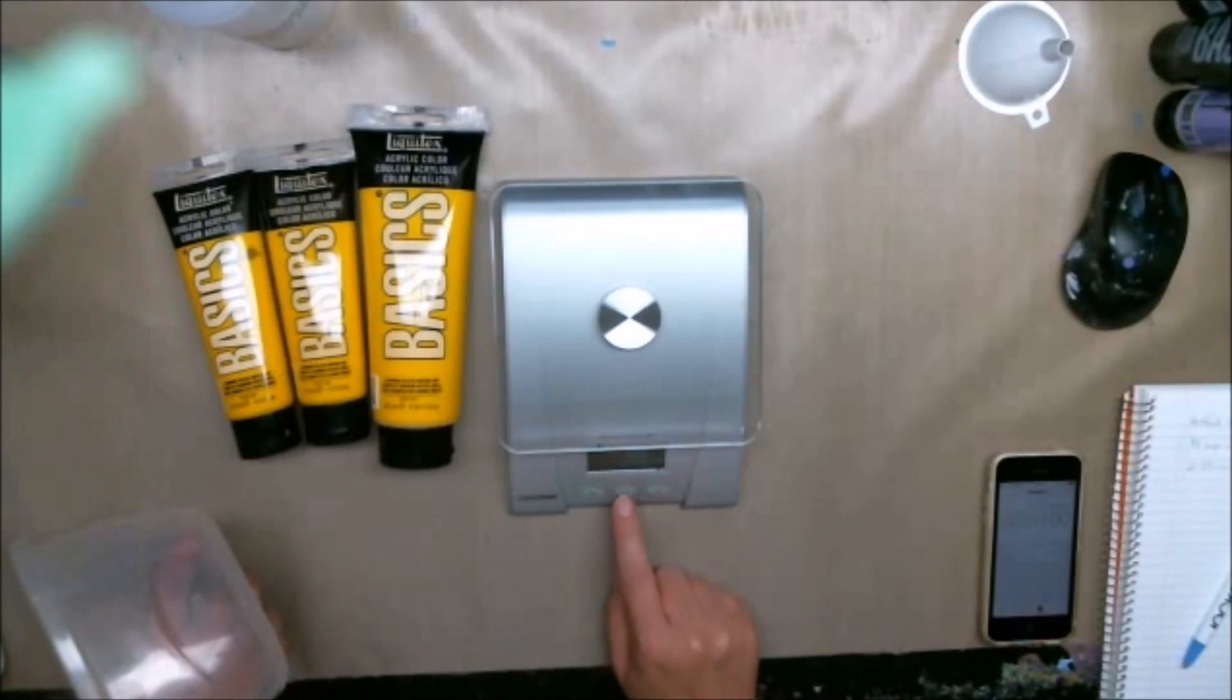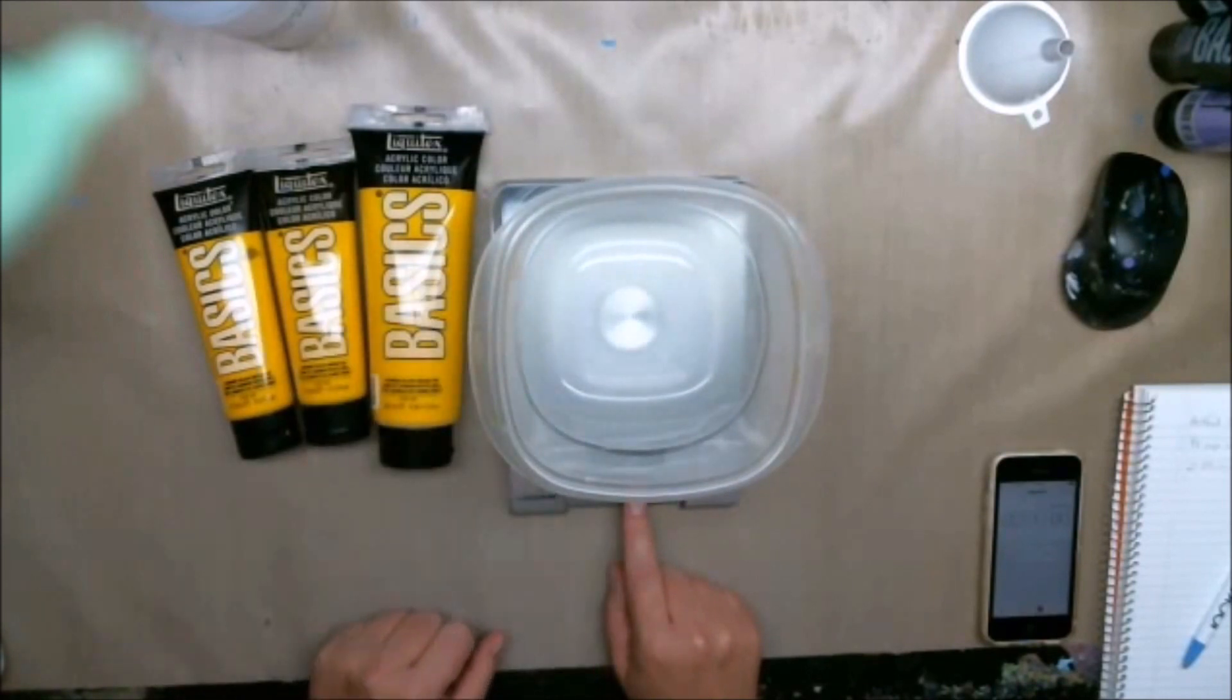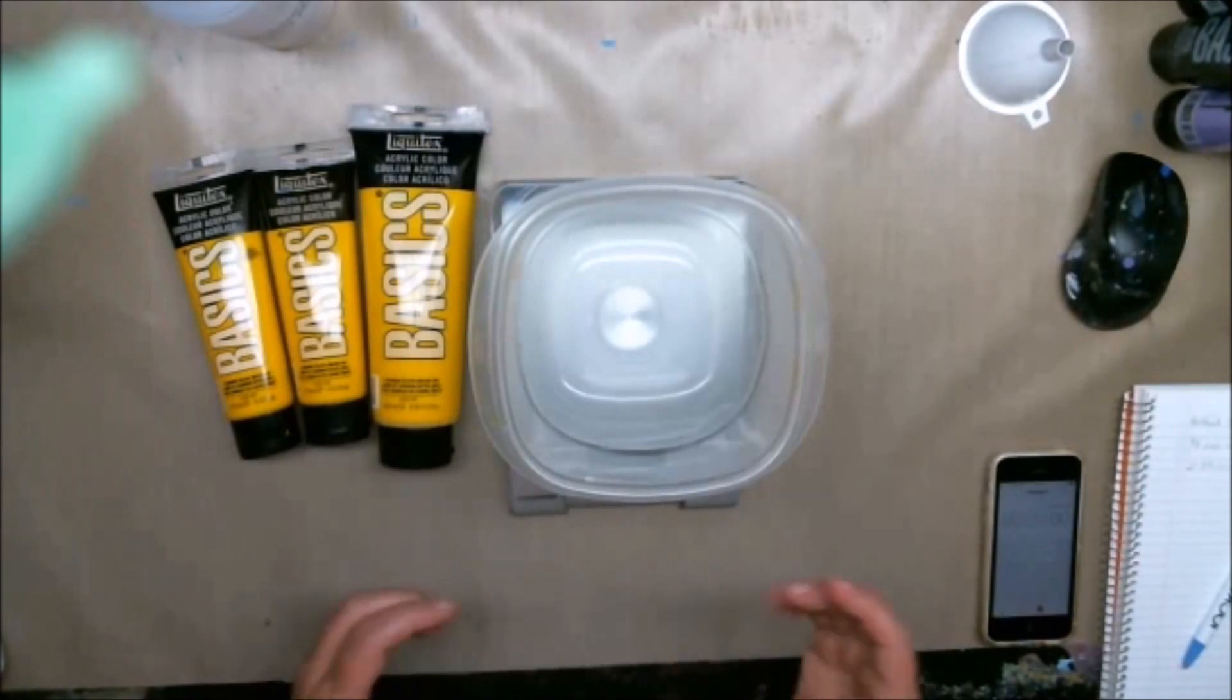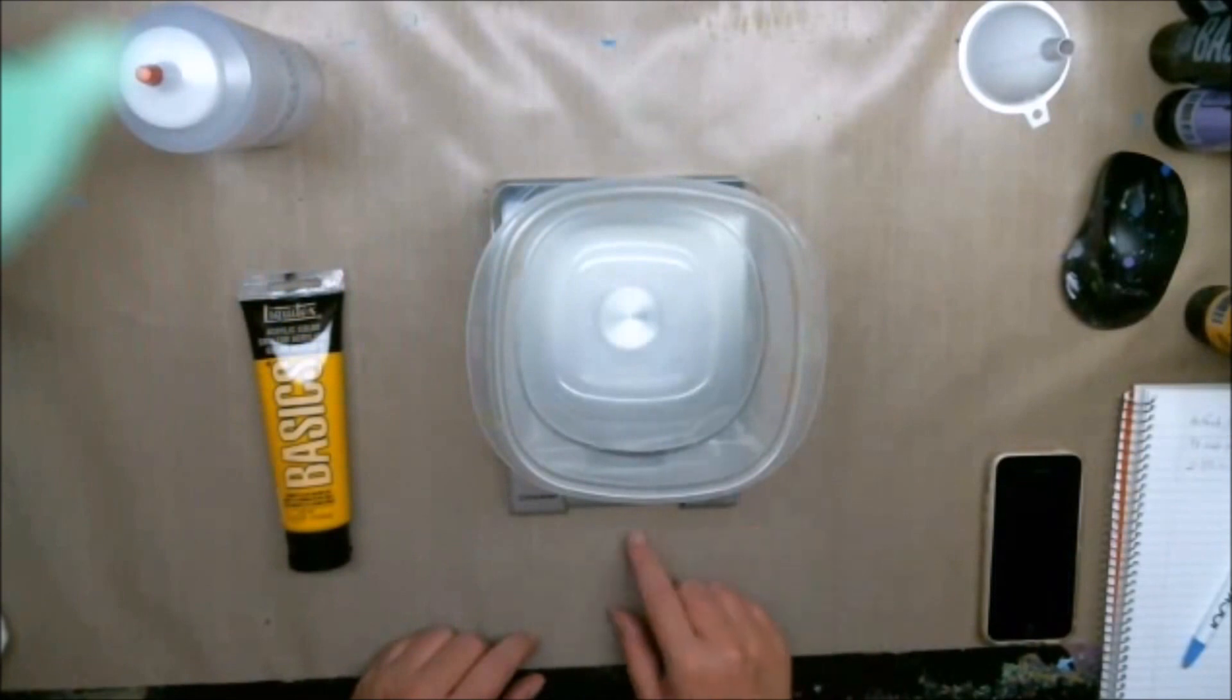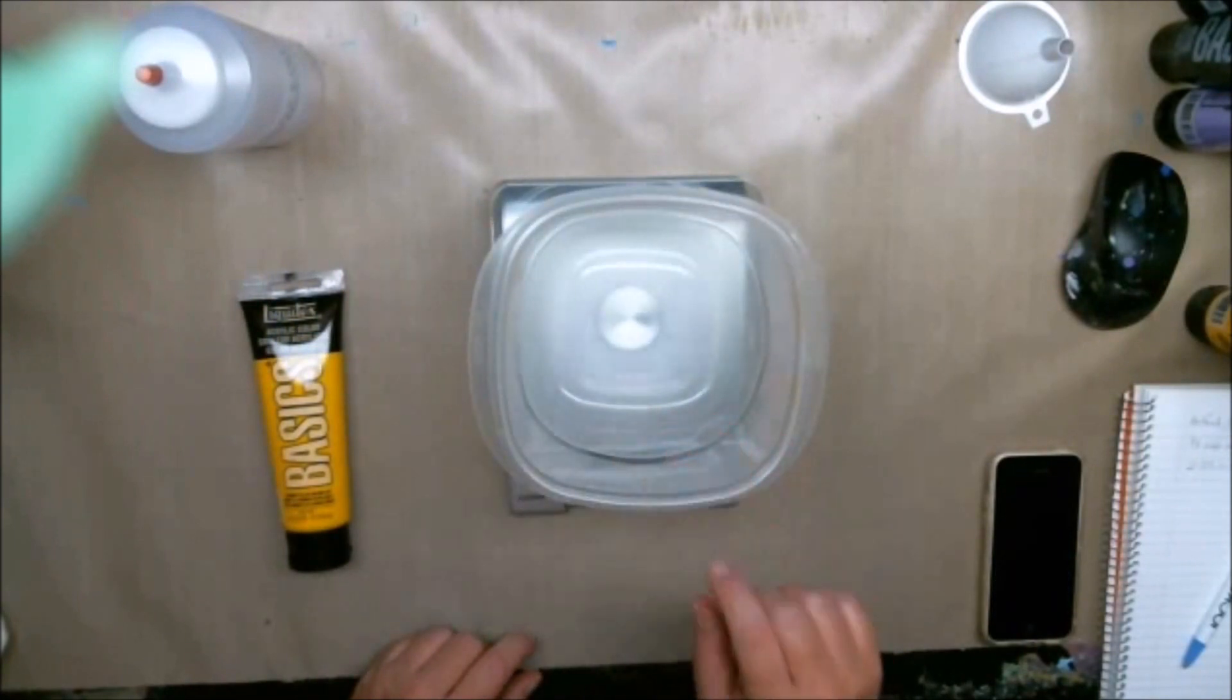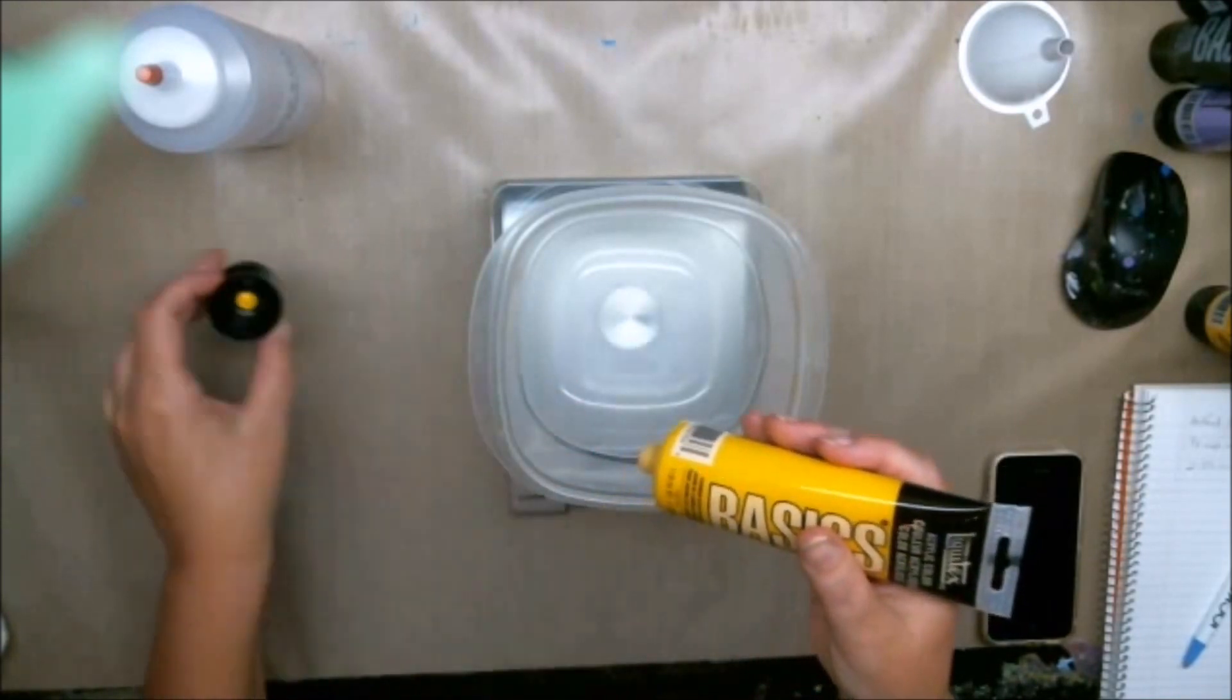Most kitchen scales come with a zero or a T button, so that means once you put your bowl or your container on top—this weighs 38 grams—you press the Z and it brings it back to zero so that the weight of the container is not taken into the recipe.